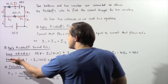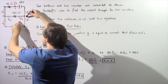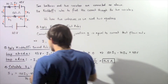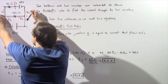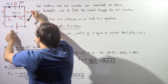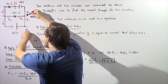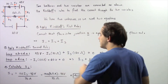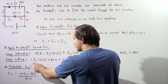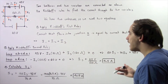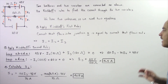Moving to loop 2 (ADEA): starting at A and going to D, we have current I3 in the opposite direction, giving negative I3 times 120 ohms. Going from D to E, we move from negative to positive electrode, giving positive 60 volts. From E back to A changes nothing, so the sum equals zero. Solving for I3 gives I3 = 60 volts divided by 120 ohms.